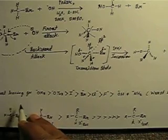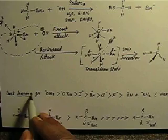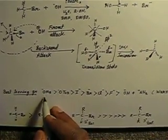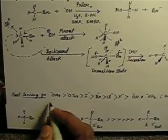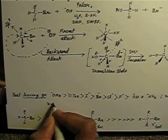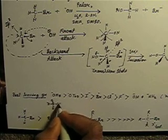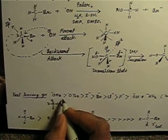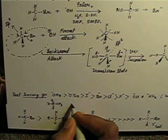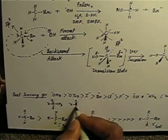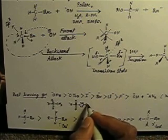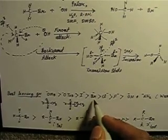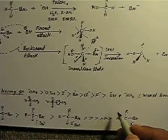Now let's see what the other leaving groups are and what their order is. The best leaving group is on the left and the worst on the right. The mesylate group — the methyl sulfoxide group — is the best leaving group. Another one is the tosyl group, also called toluene sulfonate or tosylate. Then in order: iodide, bromide, chloride, fluoride, hydroxide, and the amine group. These last two groups are very weak or worst leaving groups.